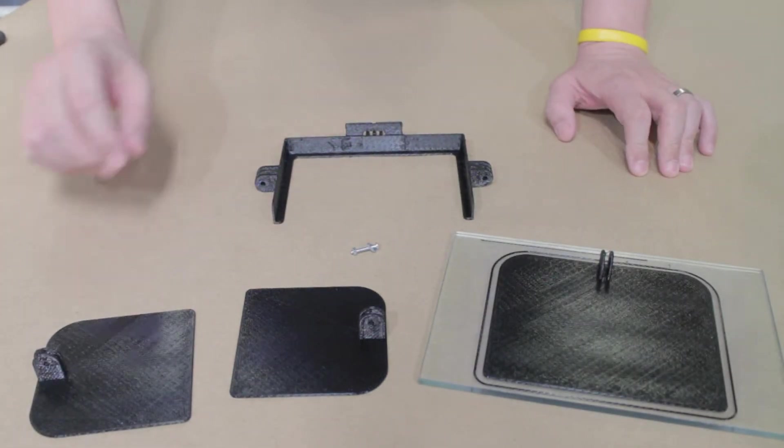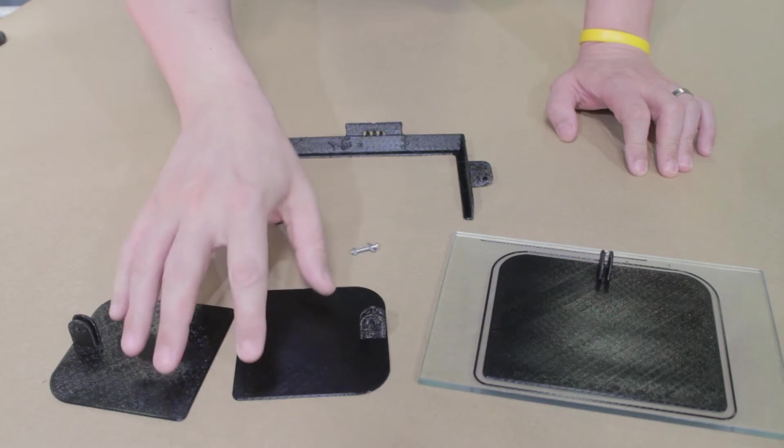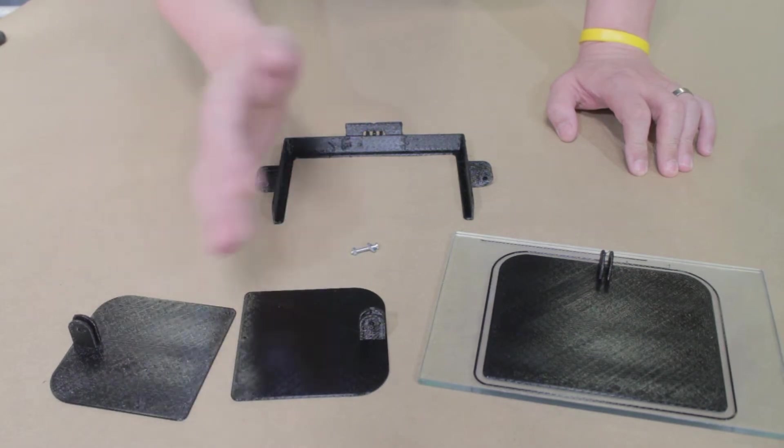All right, so here are the barn door pieces. These are the two right and left side doors.